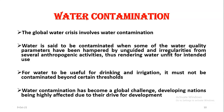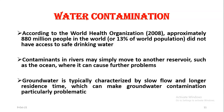The global water crisis involves water contamination. Water is said to be contaminated when some of its quality parameters have been hampered by unguided irregularities from several anthropogenic activities, thus rendering water unfit for its intended use. For water to be useful for drinking and irrigation, it must not be contaminated beyond certain thresholds. Water contamination has become a global challenge, with developing nations being highly affected. According to the World Health Organization in 2008, approximately 880 million people — or 13 percent of the entire world population — did not have access to safe drinking water.